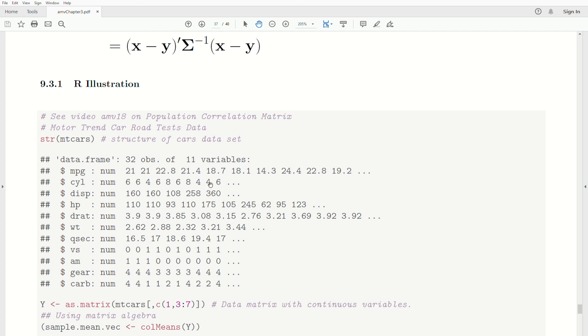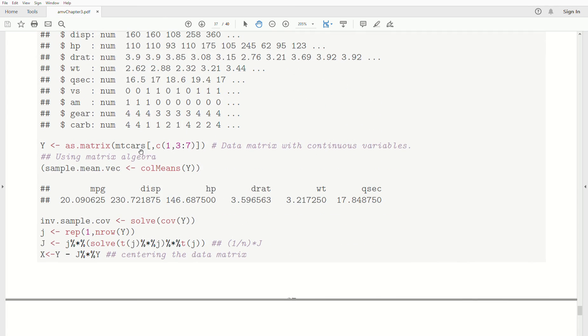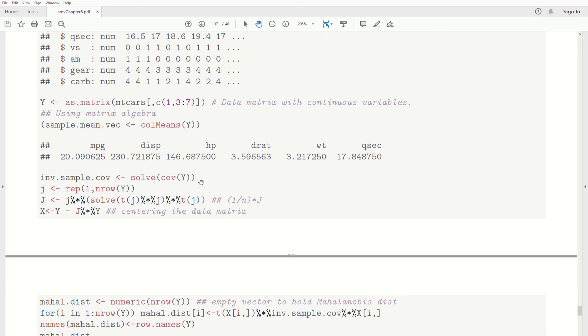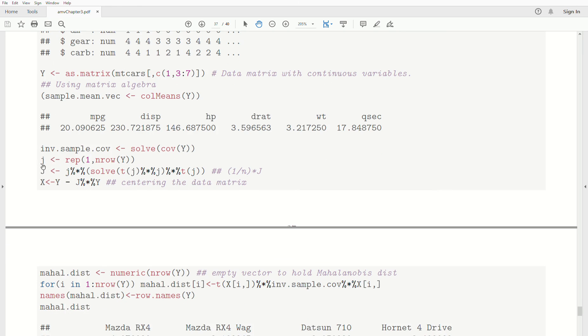Now, a brief illustration of this is that we have the motor trend cars data set. It's a data frame. We looked at it in AMV 18, which is applied multivariate playlist, video 18. 32 observations, 11 variables. We take columns one, three, four, five, six, seven, and put them in a data matrix Y. We calculate the column means, we can calculate the inverse of the covariance matrix. And then we create this J matrix, it's actually all ones times one over n. And then we can center our data matrix. So we take the mean of each component and then subtract it from the original data.